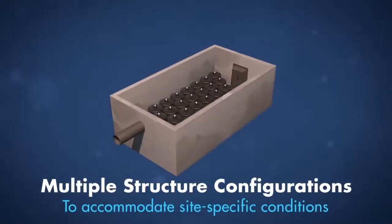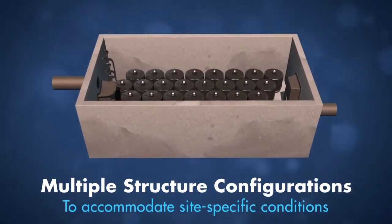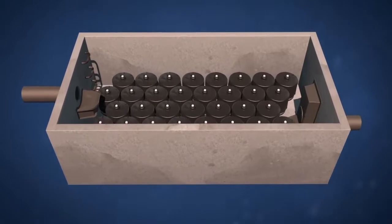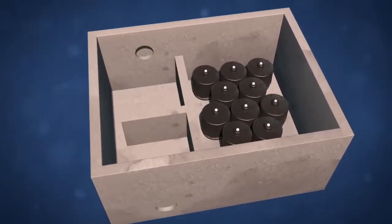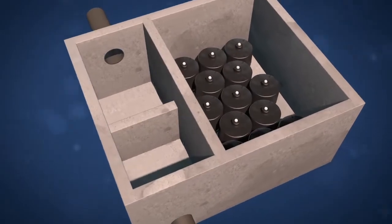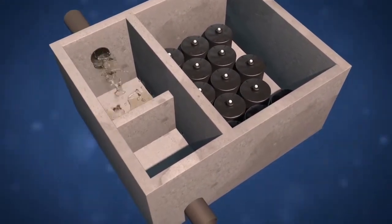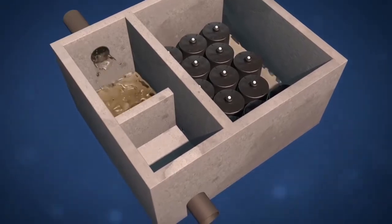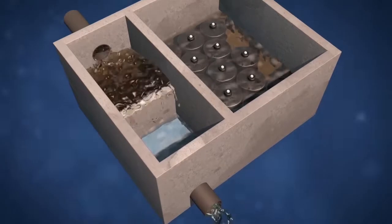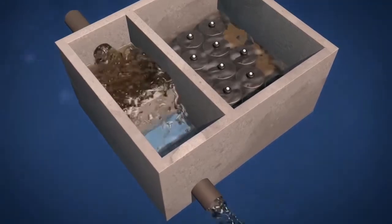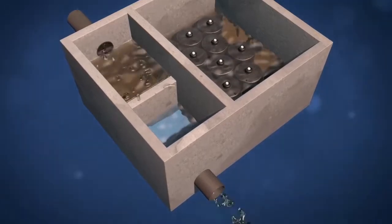The structures that house the filter cartridges can be configured in a variety of ways to accommodate a wide range of flows, project-specific footprints and variable hydraulic conditions. The high flow internal diversion storm filter provides high flow bypass and flow treatment in one structure. Water enters the chamber through the inlet and is directed to a treatment chamber containing the filter cartridges. During peak flows, the internal weir allows high flows to bypass treatment, eliminating the need for an external bypass structure.